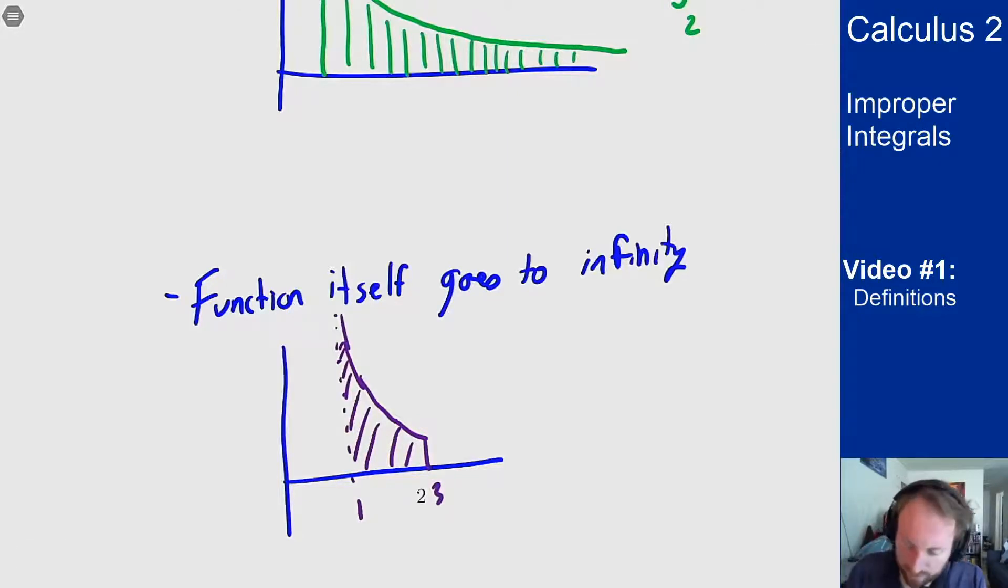This will look like a normal integral. However, the fact that this function blows up at one causes this integral to be improper. Improper meaning it's not a normal bounded region area that we're used to computing, but it's improper because it's something worse than that.